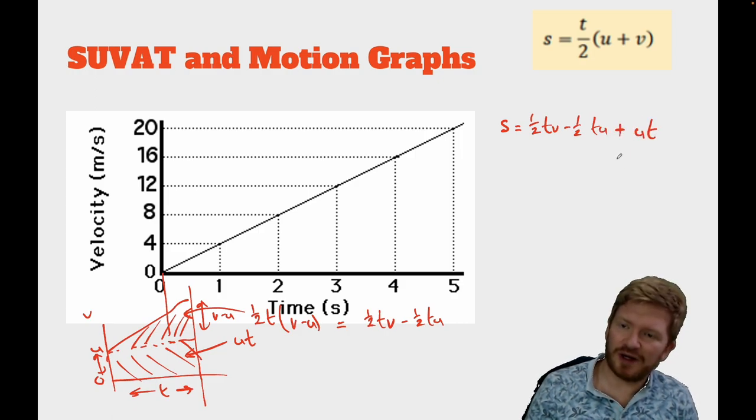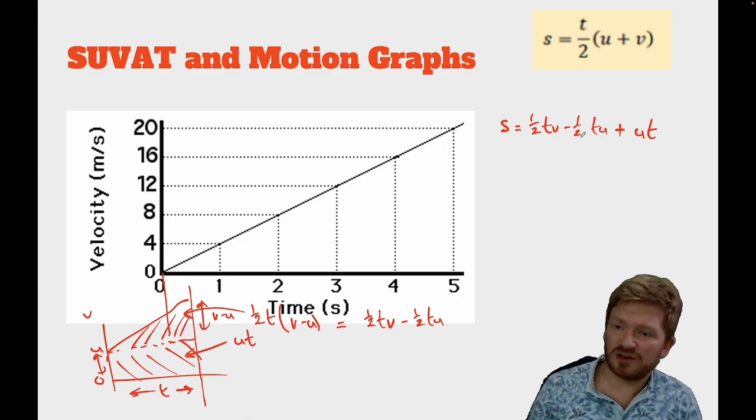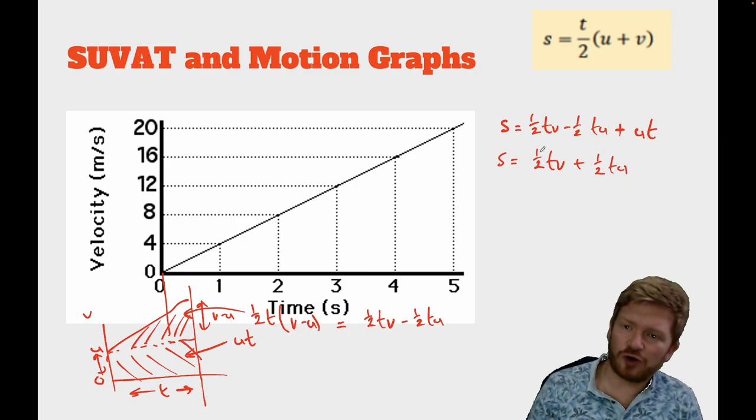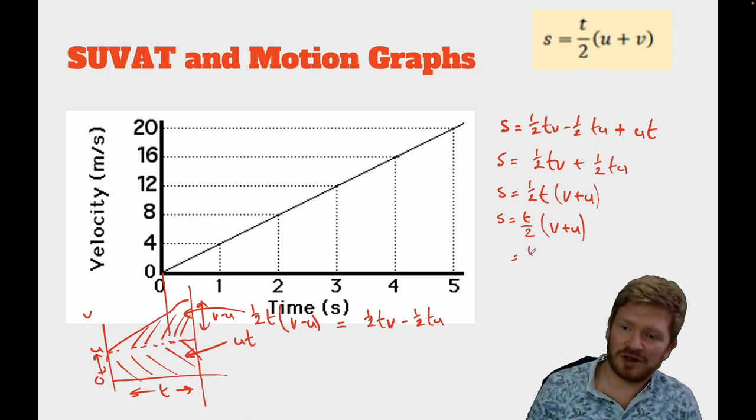So, if I look at that, I've now got minus a half t u plus a whole ut. So, that simplifies to a half t v plus a half t u. I've got common factors here of a half and a t. So, s is equal to a half t lots of v plus u. And I could just rewrite that. Rather than doing a half times t, I could just say it's t divided by 2 lots of v plus u. Or, as they have in here, addition doesn't matter which round you put it. So, I can say that's the same as t over 2 lots of u plus v.